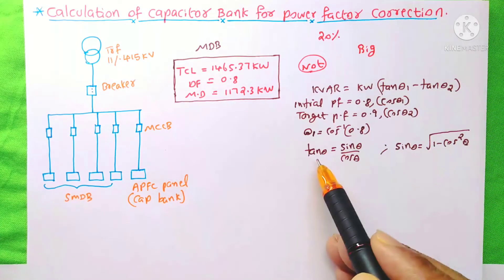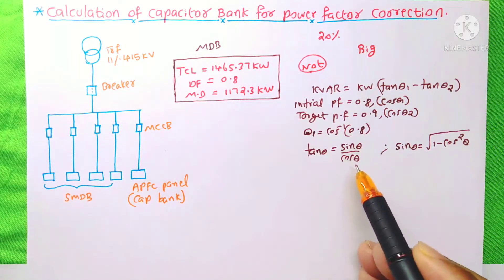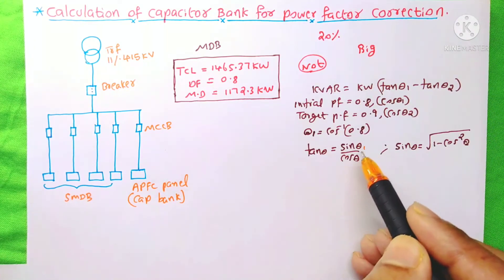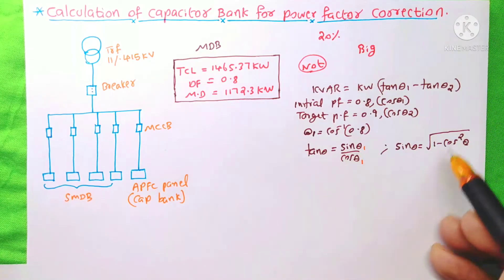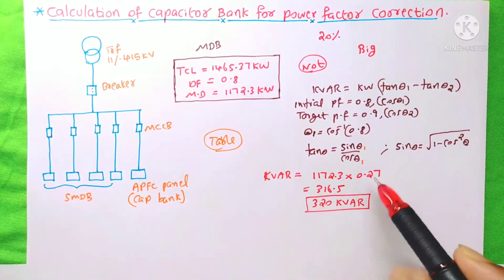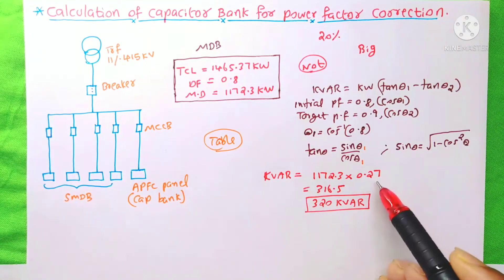Or, you can use tan theta is equal to sin theta by cos theta. We already know this cos theta1. So, find sin theta1 by using this equation. I substituted everything on this equation and I got 0.27.